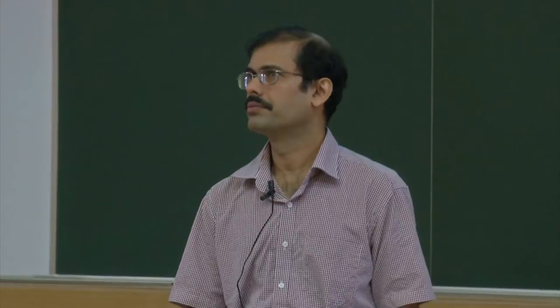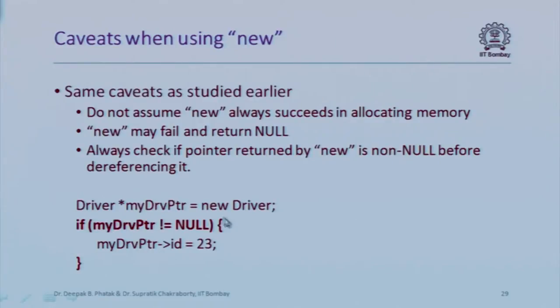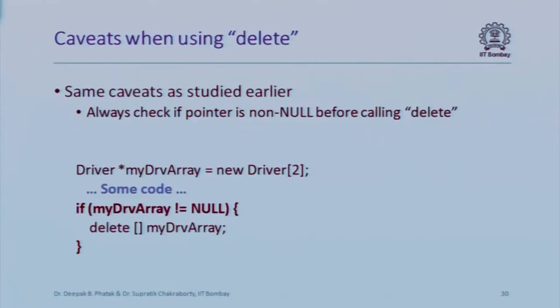Understanding dynamic allocation for structures is the same as for basic data types — no additional effort required. Always check whether the allocation succeeded: before dereferencing a dynamically allocated address, verify it is not null. If it is null, print an error message indicating memory allocation failed. Similarly, when deleting, check that the pointer is not null first.